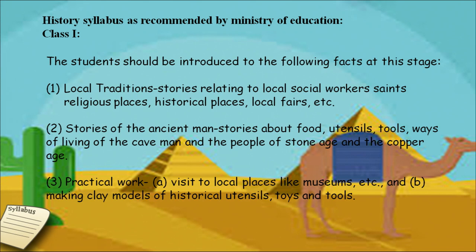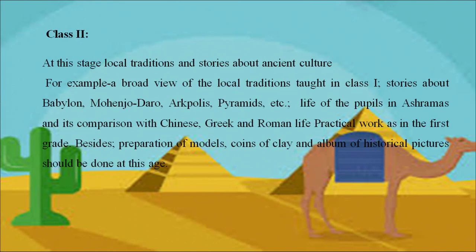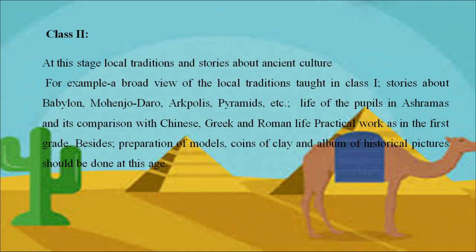Practical work for Class 1 can include a visit to a local place like a museum, and making clay models of historical utensils, toys, and tools. At Class 2, children study a broader view of local traditions taught in Class 1, as well as stories about ancient cultures — for example, Babylon, Mohenjo-daro, the Acropolis, the Pyramids, and life in ashrams compared with Chinese, Greek, and Roman life. Practical work includes, in addition to what was done in Class 1, the preparation of clay coin models and an album of historical pictures.